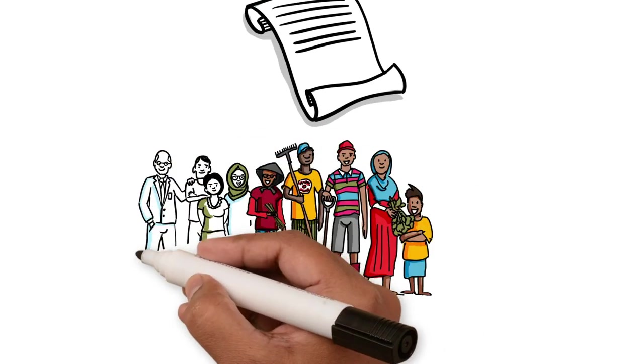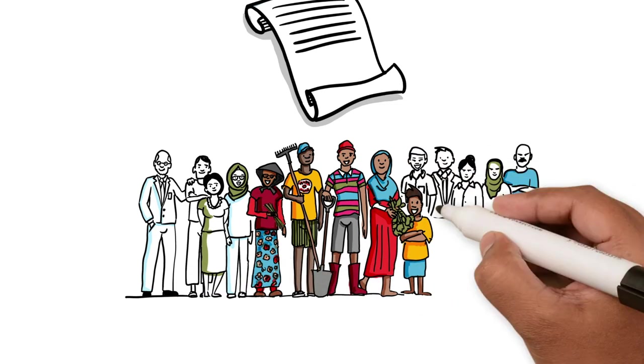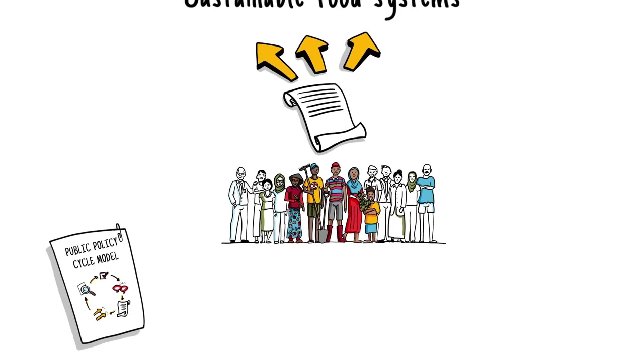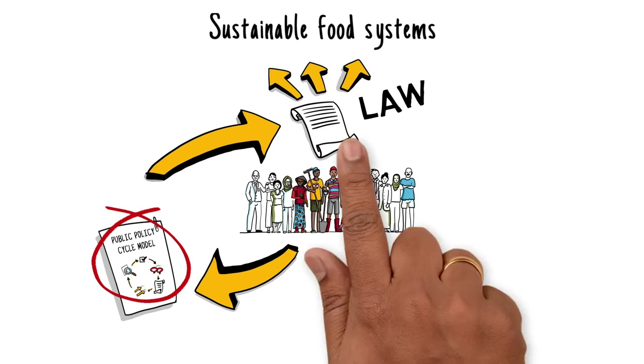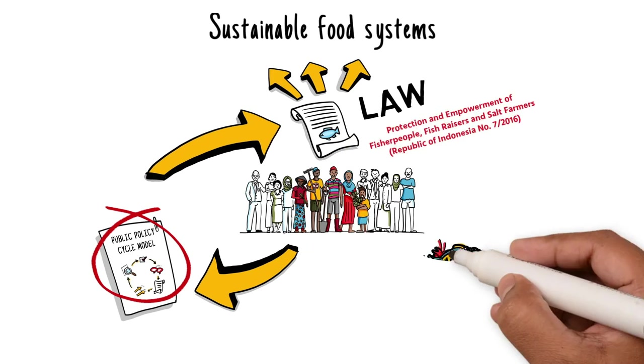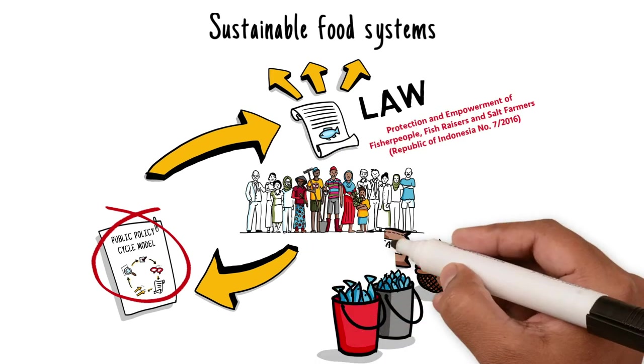It can help actors to better engage in policymaking processes for family farming. In this example, the Public Policy Cycle Model is applied to the development of an Indonesian law on the protection and empowerment of fisherpeople, fish raisers, and salt farmers.